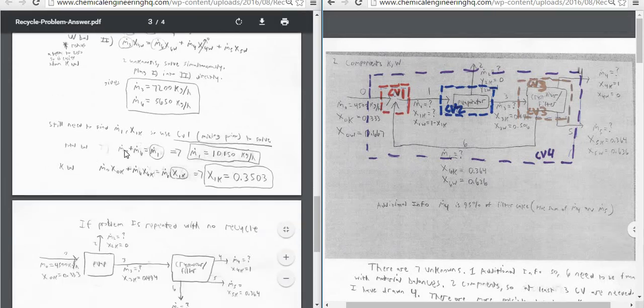If we do the total balance, we have M0 coming in, M6 coming in, and then out is M1. We can solve that straight up for M1, which is 10,150 kilograms per hour. We can do the same thing for K balance. The K coming in from stream 0, K coming in from stream 6, and then the K coming out from stream 1. And that gives us that X1K is 0.3503.